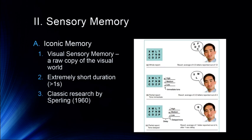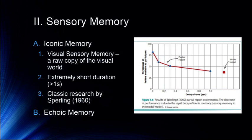Sperling was then able to examine how long iconic memory lasted by introducing various delays between the array being presented and the tone. With an immediate tone, there was about 80% report in partial report. By the time the delay reached a quarter of a second, performance dropped to about half of those items. By one second, performance was about the same as whole report. So right around a quarter of a second is when most of the iconic memory has disappeared.